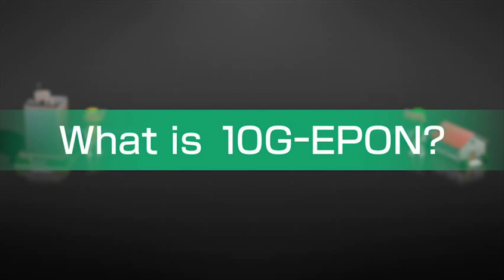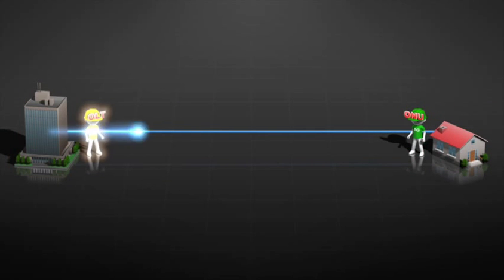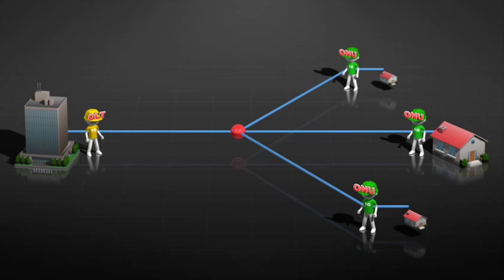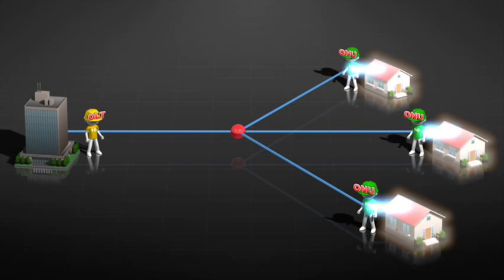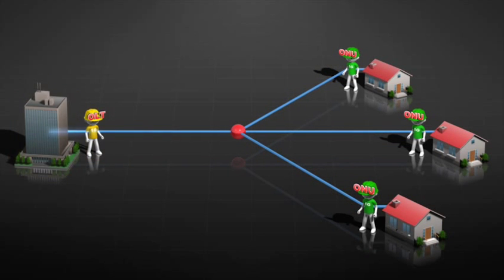So first, what is 10G EEPON? NTT provides a high-speed optical communication service over optical fibers. An EEPON is a network system that splits a single optical fiber coming from an NTT building into many fibers so that the original fiber can be shared by multiple home users.